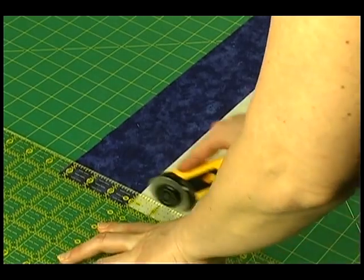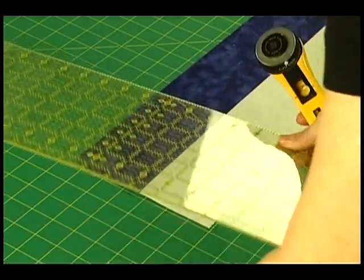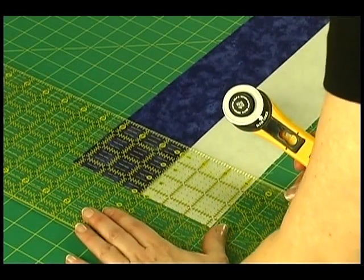Square up the strip set. Use the ruler to cut three and a half inch wide units from the strip set.